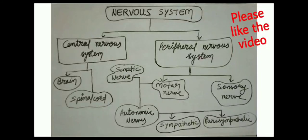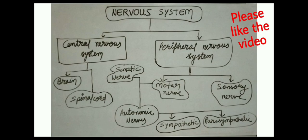Let's see the classification of the nervous system. We can classify the nervous system into two types: central nervous system and peripheral nervous system. The central nervous system is made up of the brain and spinal cord. The peripheral nervous system can be further divided into motor nerves and sensory nerves. Motor nerves contain two types: somatic nerves and autonomic nerves. Autonomic nerves also have two types — sympathetic and parasympathetic nerves.